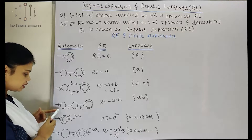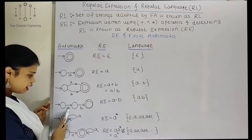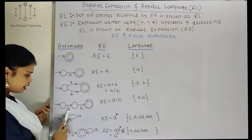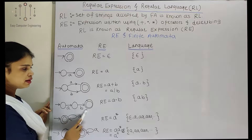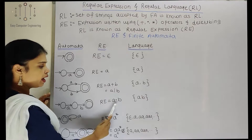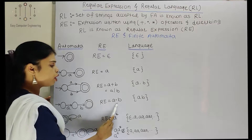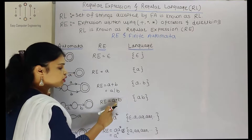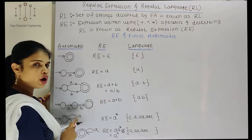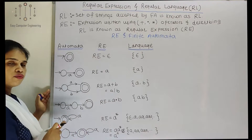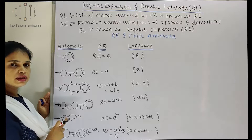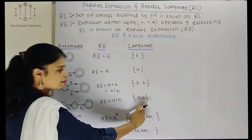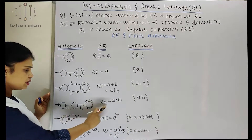Now let us consider this example where after 'a' we can accept 'b'. This is a concatenation — after 'a' there is a 'b', and then we are reaching the final state. So the regular expression is 'a dot b'. This dot operator is called concatenation. The only string we can accept using this regular expression and finite automaton is 'ab'.